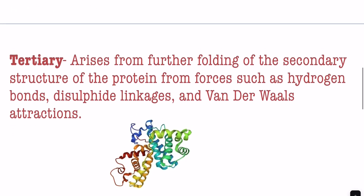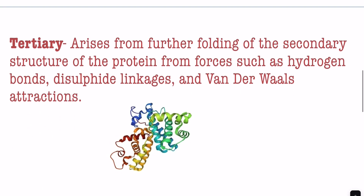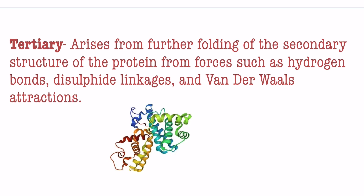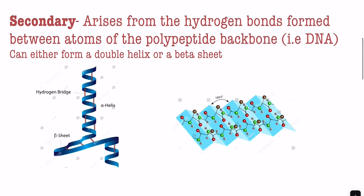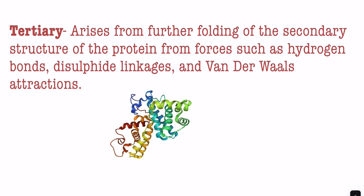Next we will talk about the tertiary structure of proteins. The tertiary structure arises from further folding of the secondary structure of the protein from forces such as hydrogen bonds, disulfide linkages, and van der Waals interactions. With the secondary structure we only talked about hydrogen bonds, but with the tertiary structure we have many more different types of forces that can cause this structure.